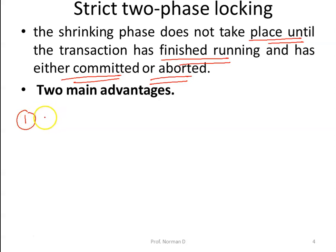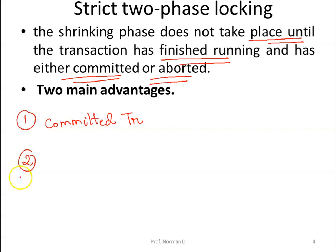Therefore, one never has to abort a transaction because its calculations were based on a value it should not have seen. The second advantage is that all lock acquisitions and releases can be handled by the system without the transaction being aware of it. This policy eliminates cascaded aborts — having to undo a committed transaction because of a file it should not have seen.